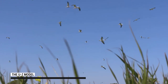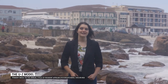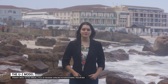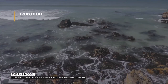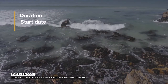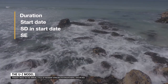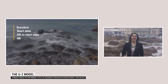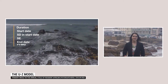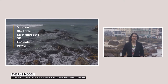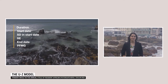The Underhill-Zucchini moult model is used to analyse the wing as a whole alongside the individual primary feathers. The model estimates the duration, start date, standard deviation in start date, and the standard errors of these. This allows for the calculation of an end date. The PFMG — percentage feather mass grown — is also calculated and worked out for each day.